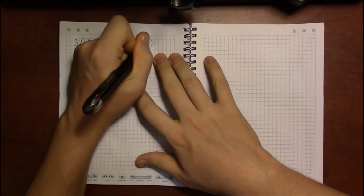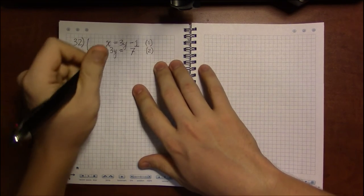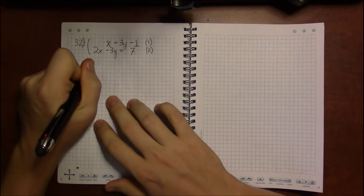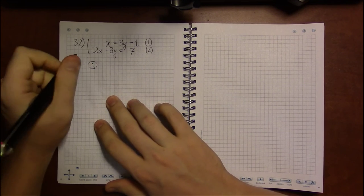Here, we're told that x equals 3y minus 1, and 2x minus 3y equals 7. So, labeling these equations so it's easier to refer to them in these notes here.